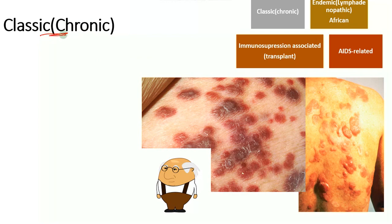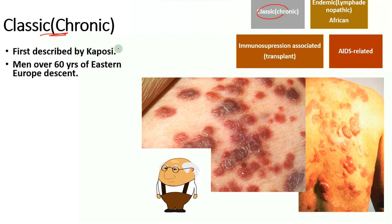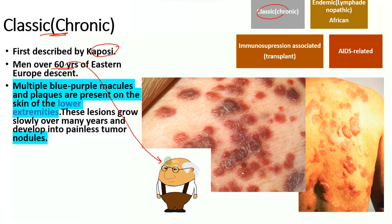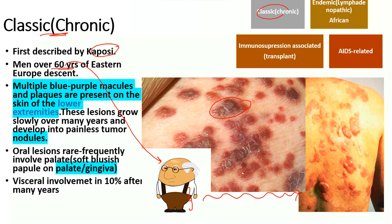Starting with classic Kaposi's sarcoma, which was described by Kaposi himself in men over 60 years of age of eastern descent. He noticed blue-purple macules present especially on the lower extremities, which grew over years slowly into painless tumour nodules. Oral lesions were rare but if found, they were on the palate and the gingiva, and visceral involvement occurred in about 10% of cases after many years.